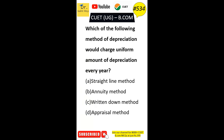Which method of depreciation would charge a uniform amount of depreciation every year? Option A: straight line method. Option B: annuity method. Option C: written down value method. Option D: appraisal method. The correct answer is Option A — straight line method.